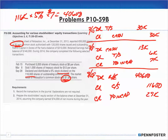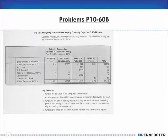That's it for that exercise. Now let's look at the next one — analyzing stockholders equity. The question is: what is the par value of the company's common stock? This is the last problem for chapter 10. Columbia Analyst reported the following statement of stockholders equity for the year ended September 30th, 2014.